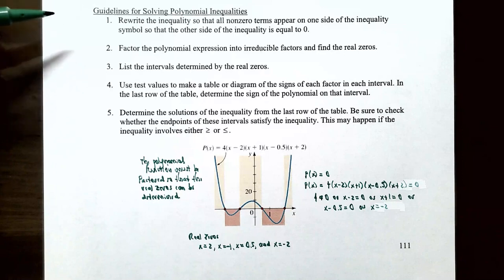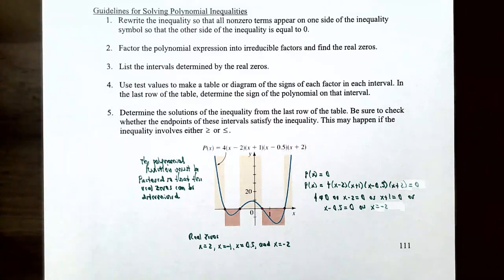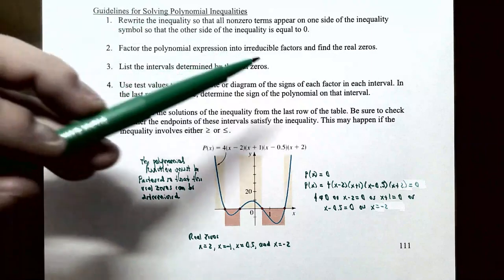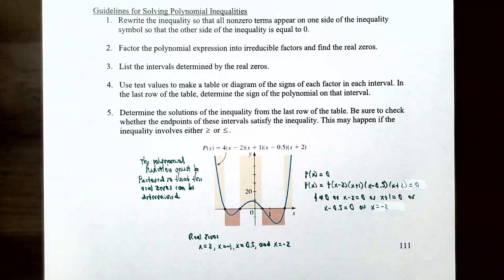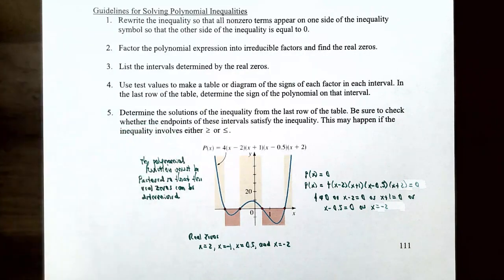The guidelines for solving polynomial inequalities: Step one, rewrite the inequality so all non-zero terms appear on one side and the other side is zero. Step two, factor the polynomial into irreducible factors — linear or irreducible quadratic — and find all real zeros. Step three, list all intervals determined by the real zeros on a sign chart or number line. Step four, use test values to determine the sign of the polynomial in each interval. Step five, determine the solutions from the last row of the table, and check whether endpoints satisfy the inequality if it involves ≥ or ≤.